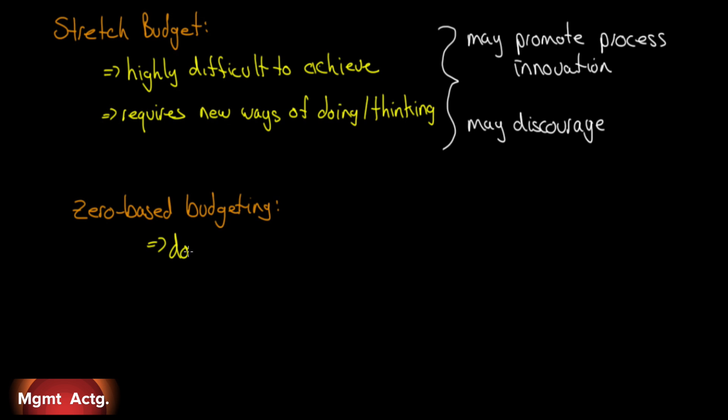Zero-based budgeting. This does not use previous periods as a baseline. In other words, to budget for next quarter, we don't take this quarter and increase sales by a certain percentage. It does not use a previous period as a baseline. The baseline is zero in each period, so that all numbers generated must be justified each period.